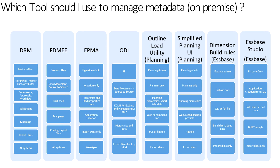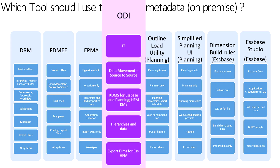Another option is ODI. ODI is more of an IT-driven ETL tool — it moves data from source to source but does not actually maintain any hierarchies or metadata. It is currently supported in version 11.1.2.4, but the future for those adapters is a little unclear, since FDMEE is the strategic direction forward. ODI does allow you to move hierarchies and data across EPM systems and other applications, and you can export out dimensions from Essbase and HFM.